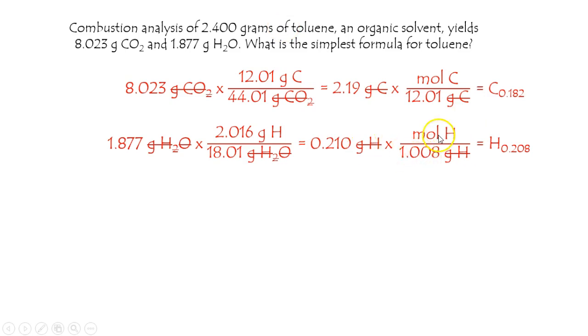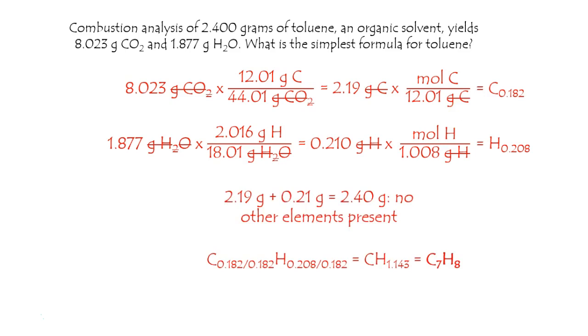Getting the mole data, I then see that it's not a clean ratio, is it? Dividing by the smallest one cleans it up a little bit better. But it's still C1 to H1.143.